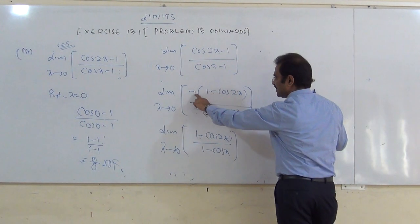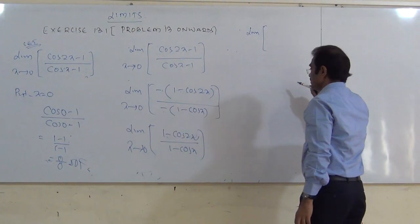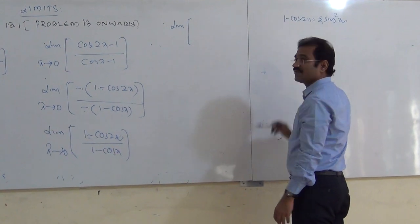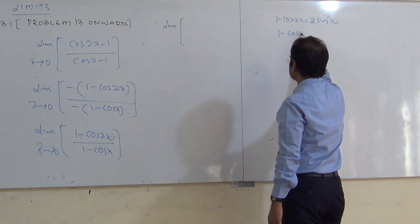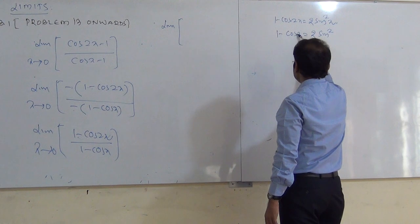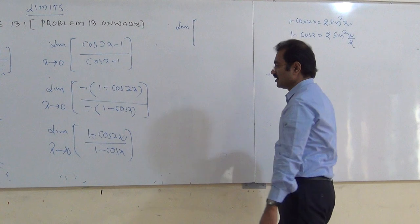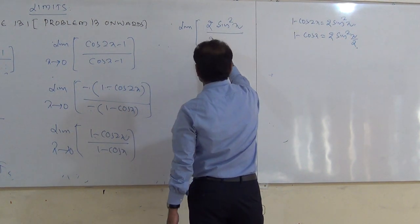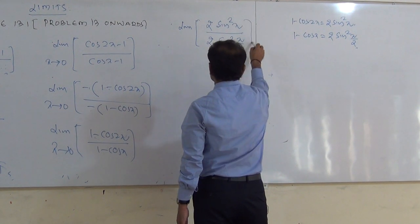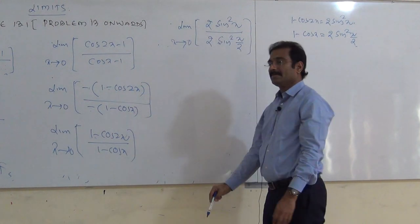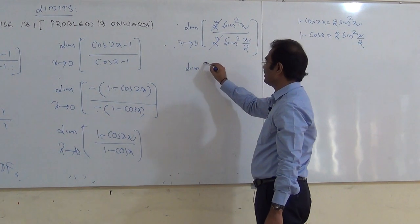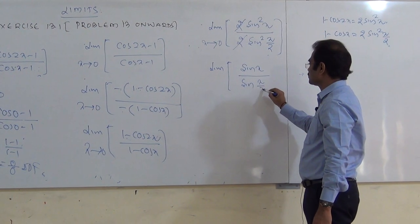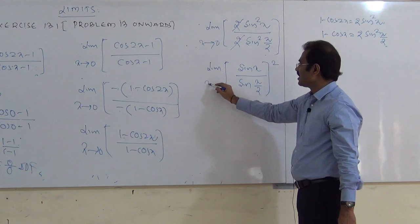We know the half-angle formulae: 1 − cos 2x = 2 sin²x, and 1 − cos x = 2 sin²(x/2). Substituting: limit of [2 sin²x] / [2 sin²(x/2)] as x tends to 0. The 2's cancel, giving limit of [sin x / sin(x/2)]² as x tends to 0. Now I need to apply modifications.